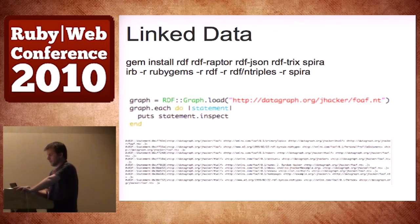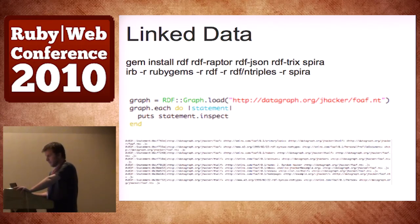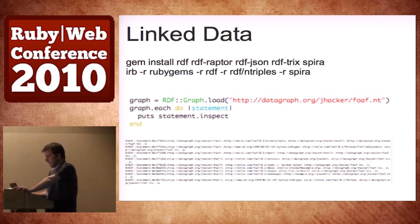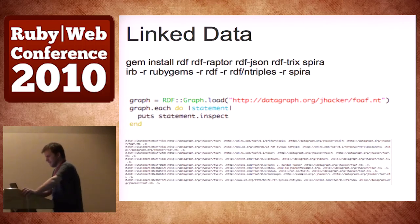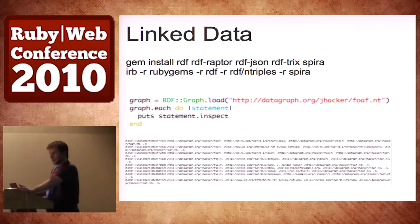If you install all that and start an IRB console, require your RDF and triples in Spira. In this simple application, I added a graph from an external resource — consumed a web service — and for everything in there I just put the node that was out there. It's a bunch of gobbledygook but it's real information about Jay Hacker: his name and a lot of things about him. That's useful. That's a start.